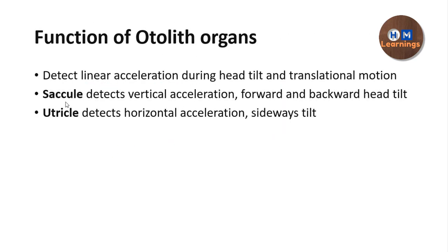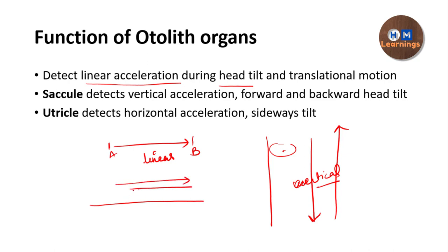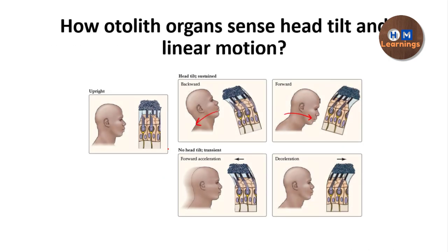The saccule has a vertical alignment, so it senses vertical acceleration and deceleration. The utricle is arranged horizontally, so it senses horizontal acceleration — towards the right or towards the left — as well as sideways movement. For head tilt: in the case of the saccule it is forward and backward head tilt; in the case of the utricle it is sideways — right and left tilt.